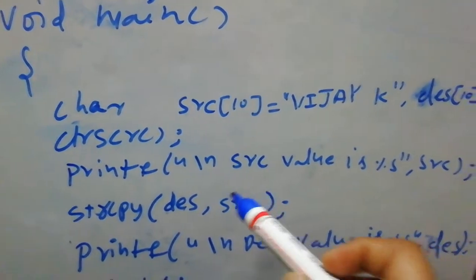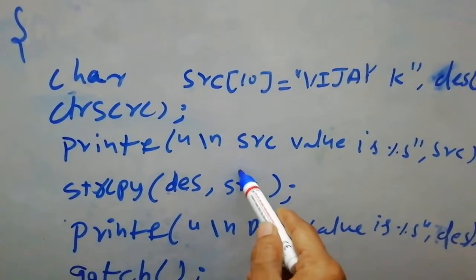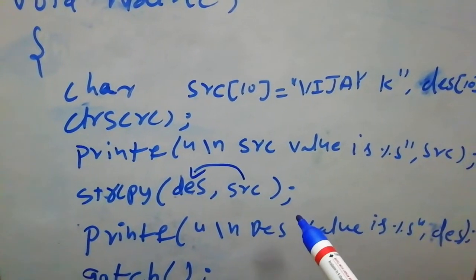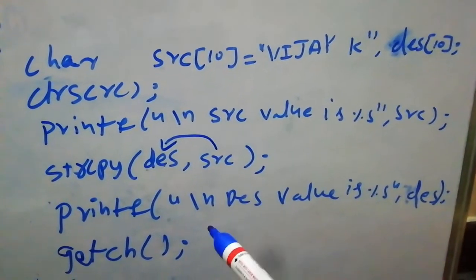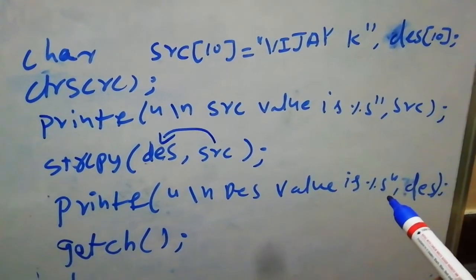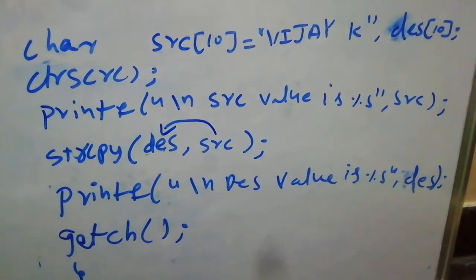What happens here is it copies the value from source into destination. The source value will be copied into destination. Next, I am printing the destination value.